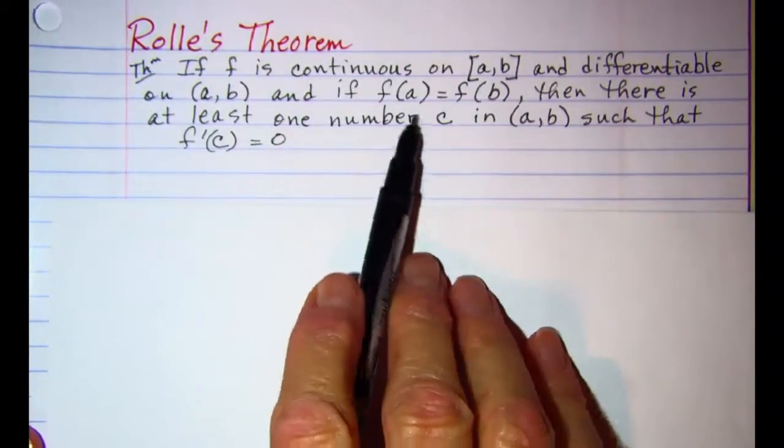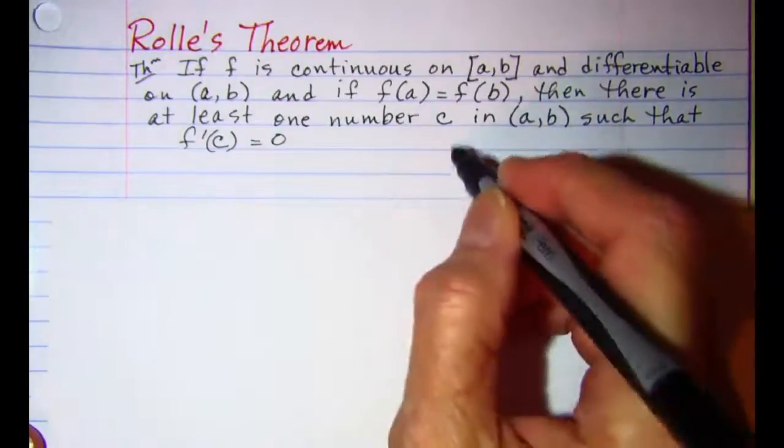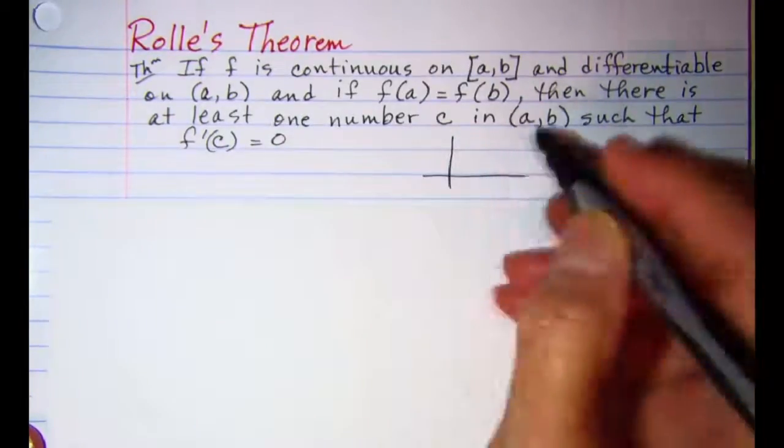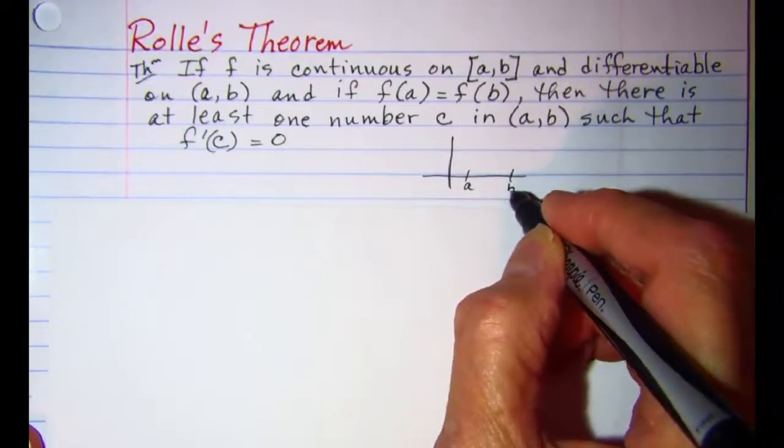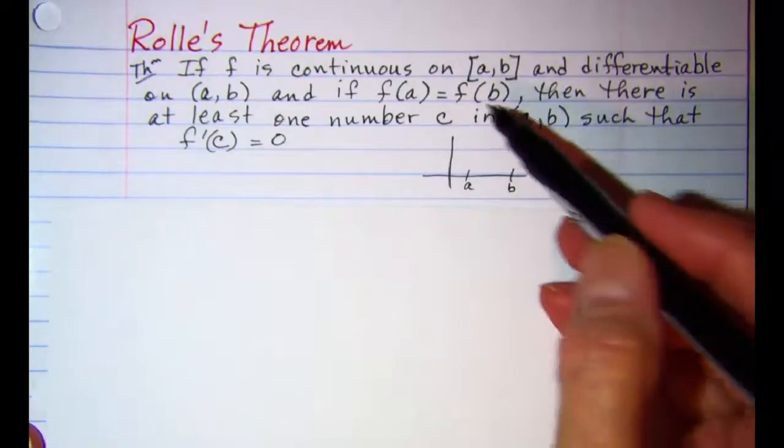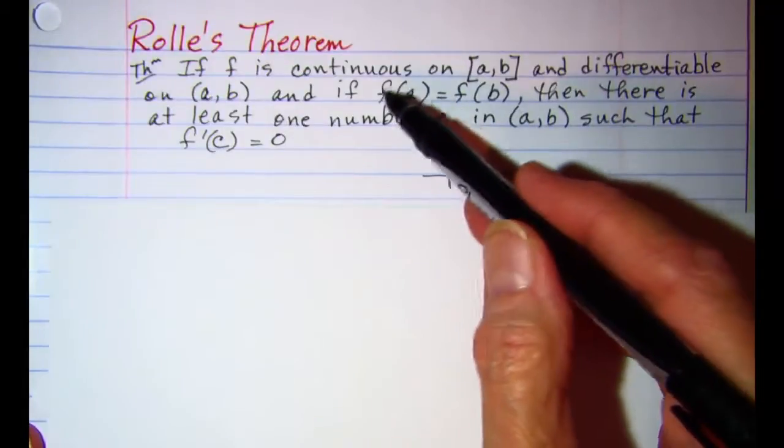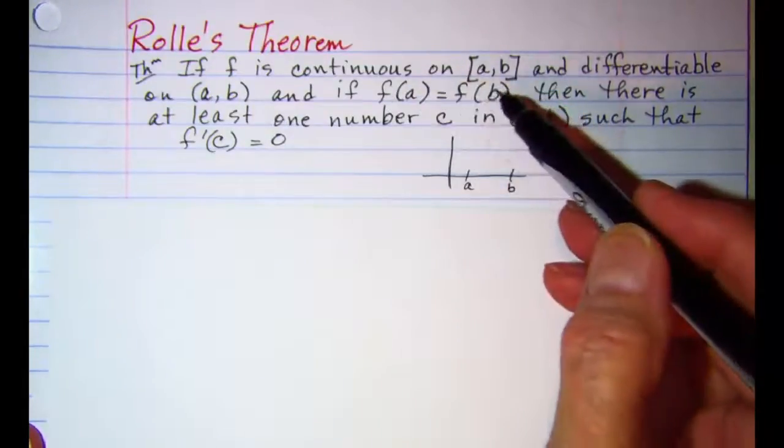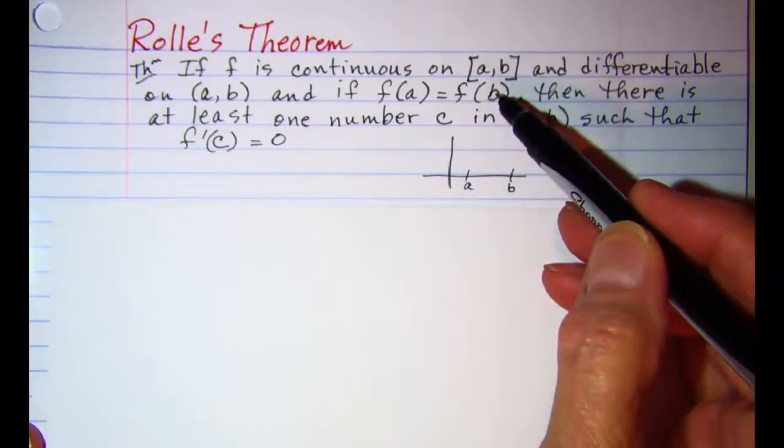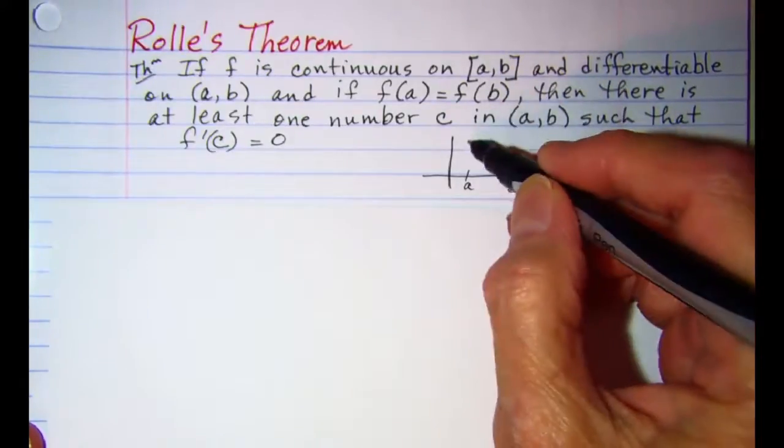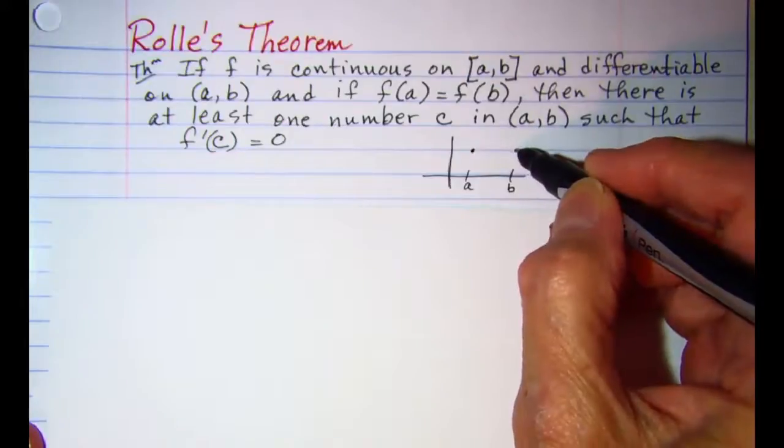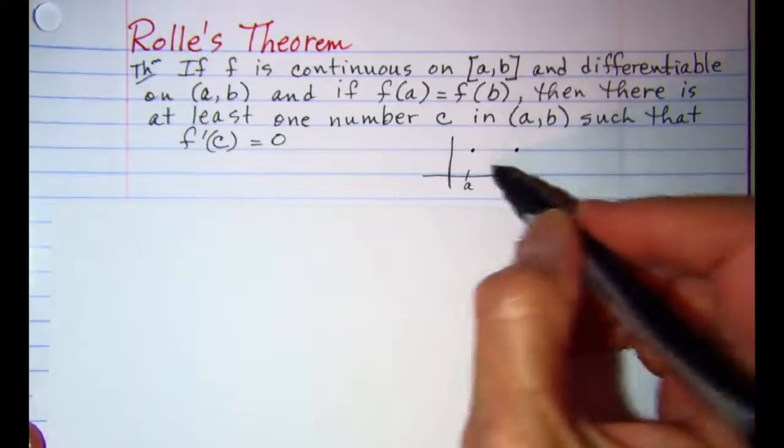So basically this is stating that if a and b are here and the y value associated with a is equal to the y value associated with b, in other words, f of a and f of b are the same y value.